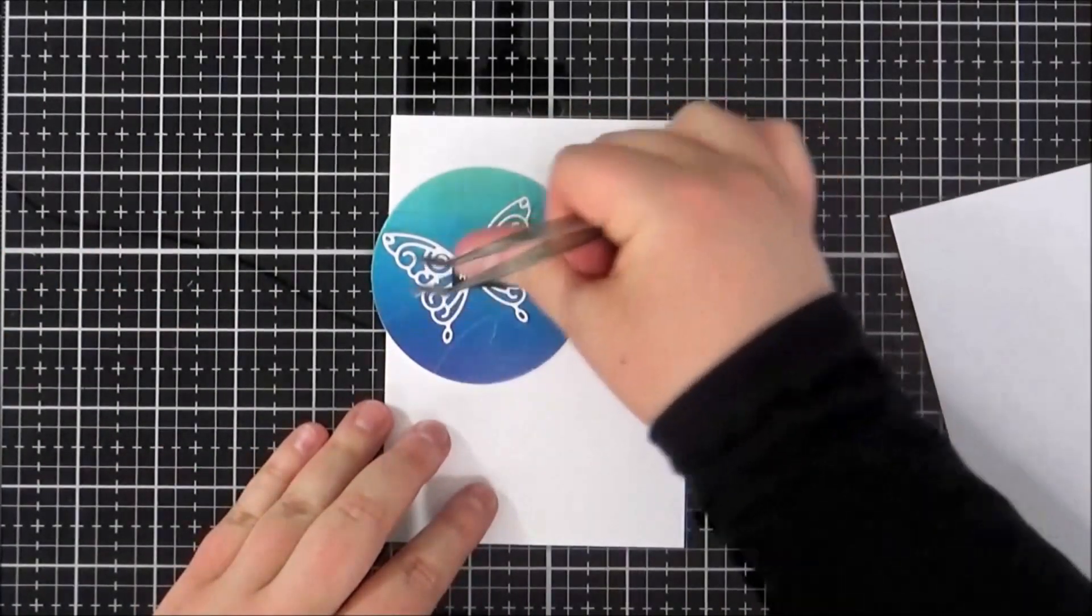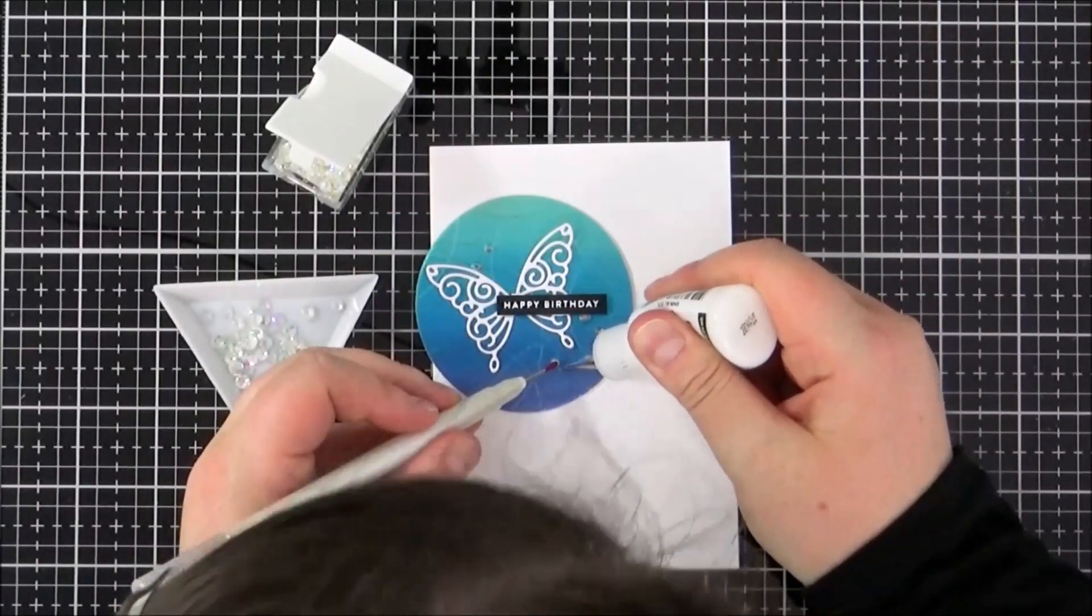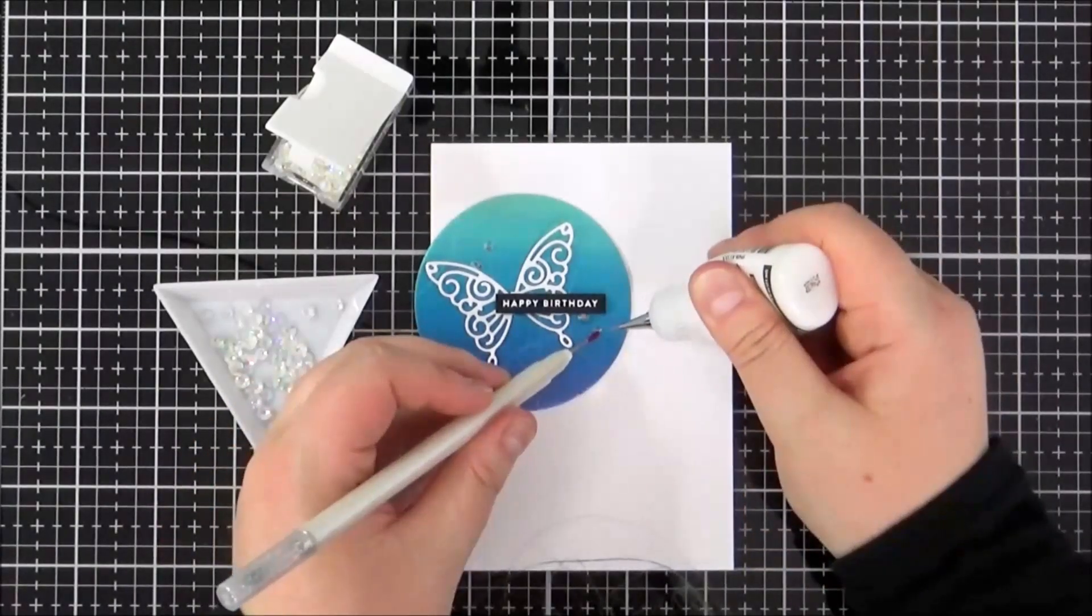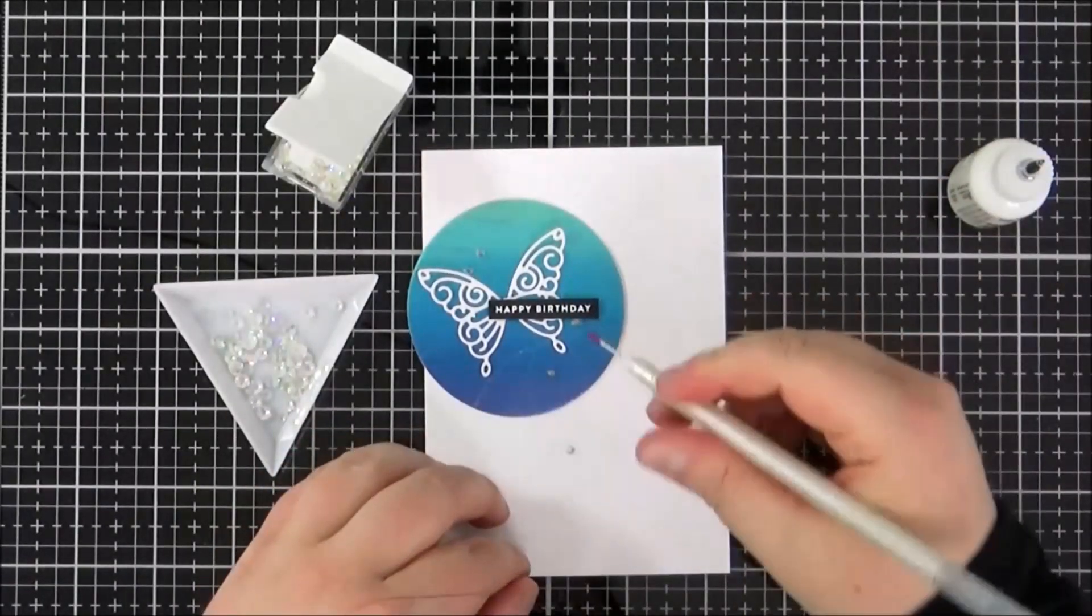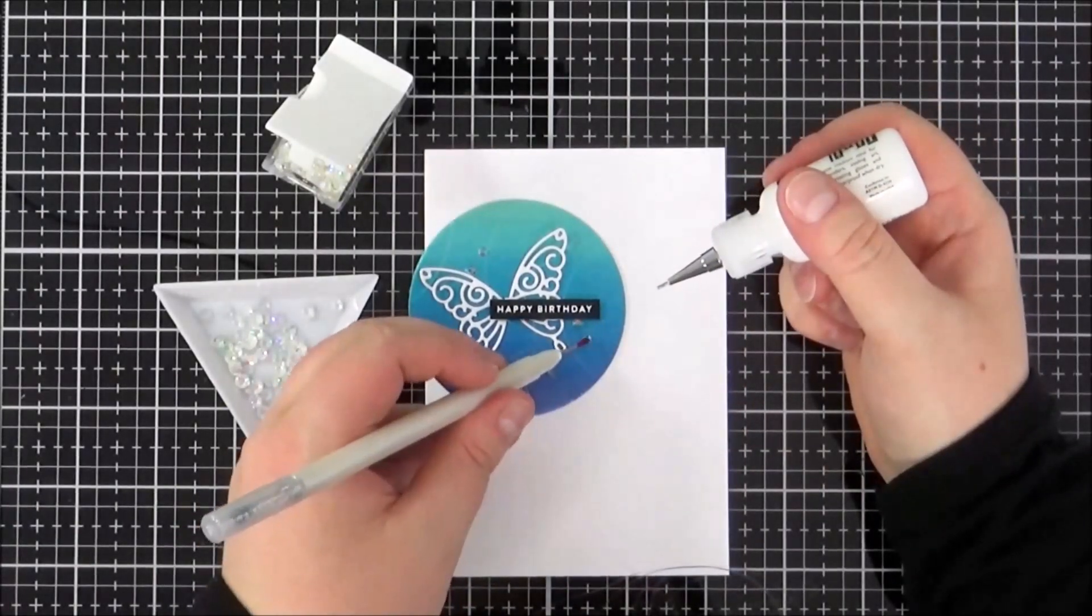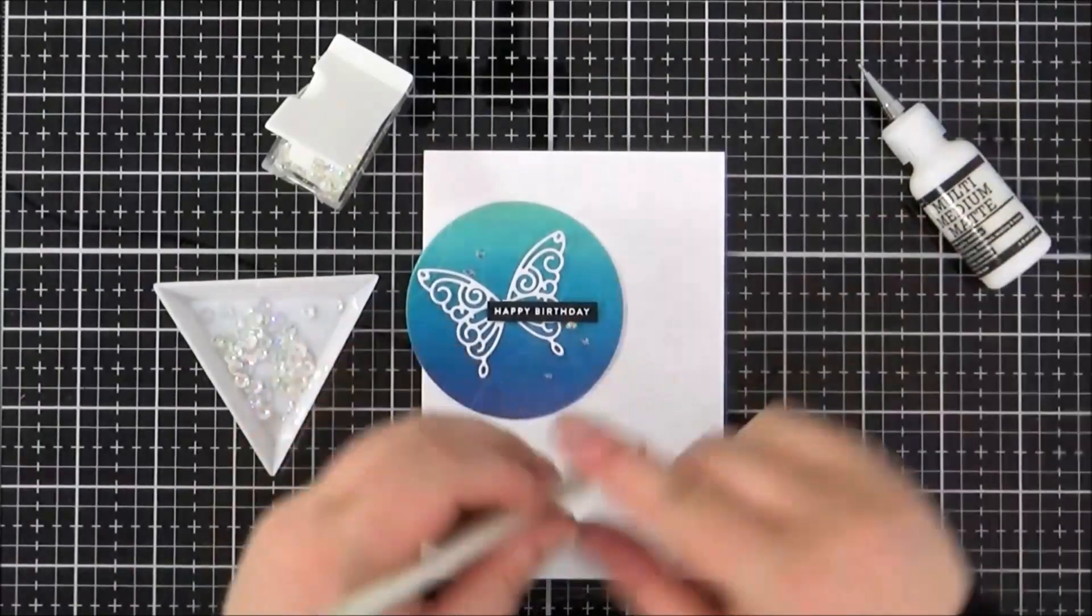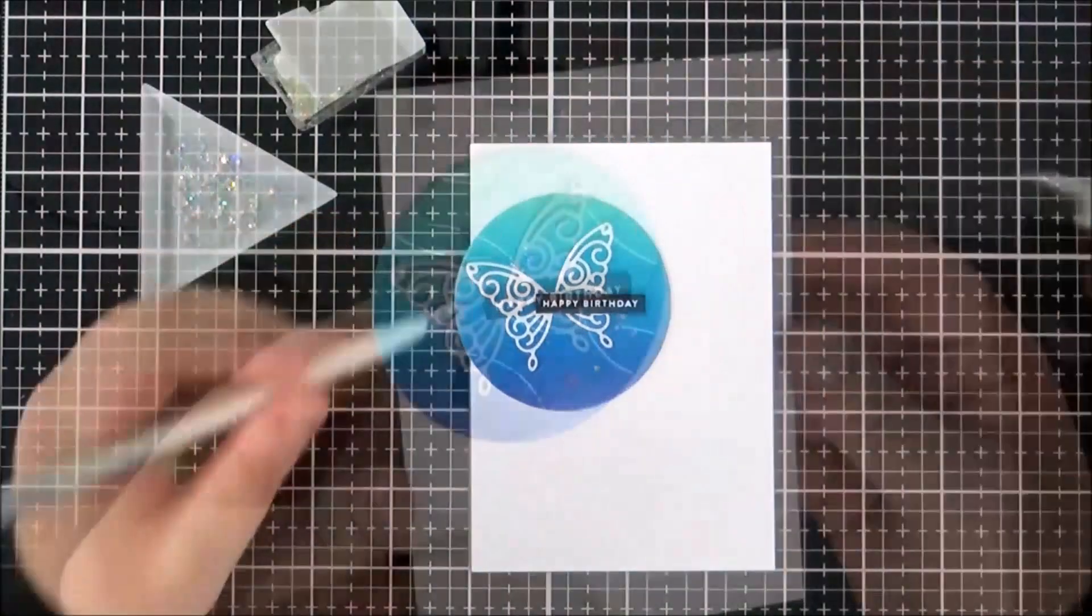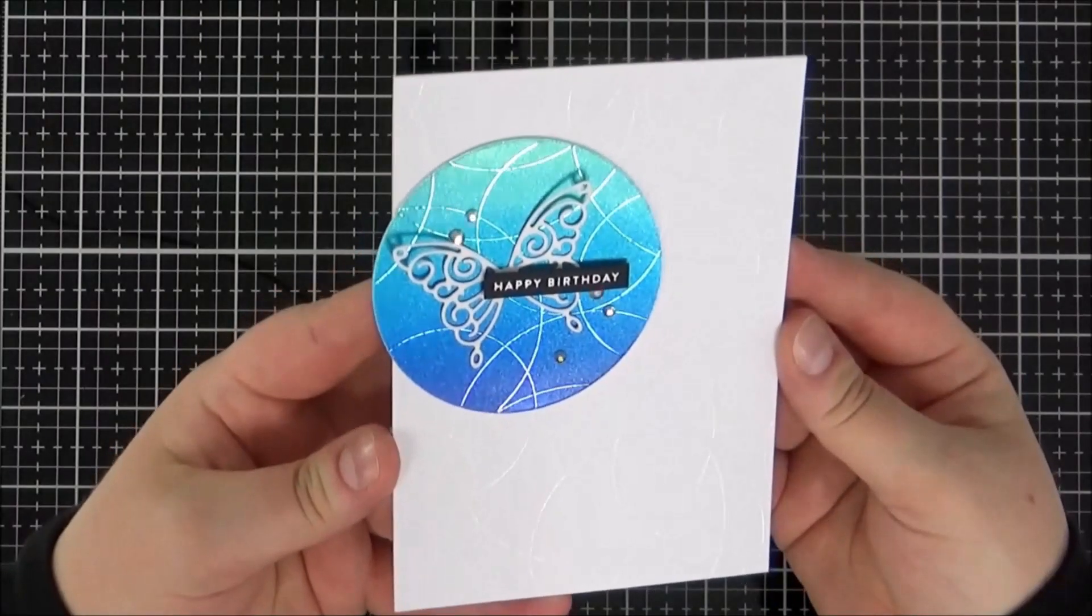To finish off my card, I'm adding some iridescent jewels from Lucy's Cards onto my panel with some multi-medium matte glue. I'm using my jewel picker to lift them up and place them down. I find the stick isn't always great on the jewel picker, but when I wet it slightly, it picks up really nicely.